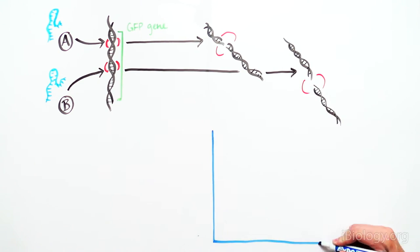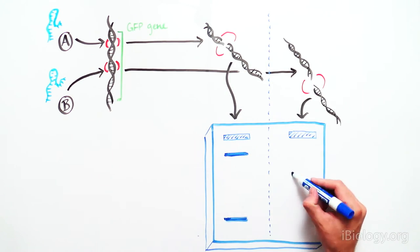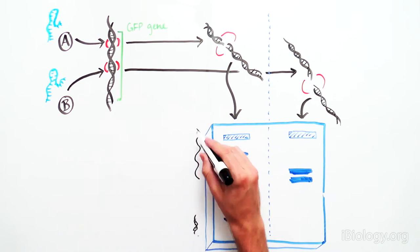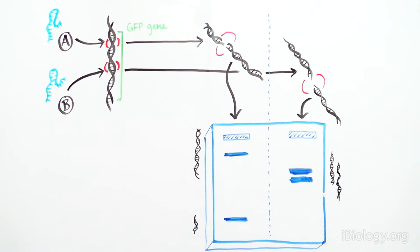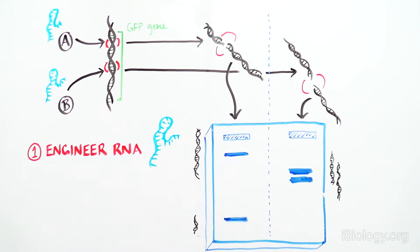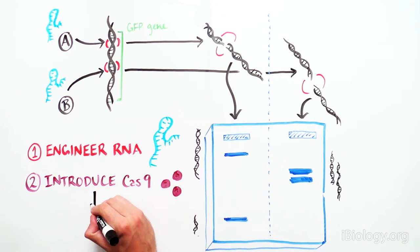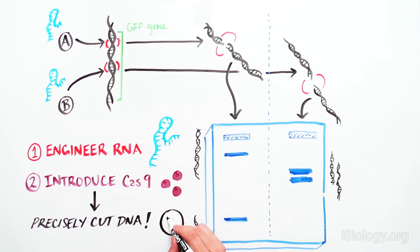On a gel that separates DNA according to size, you can see distinctly sized fragments of the GFP DNA molecule resulting from having been cut in a specific location. This was huge as it meant that scientists could engineer one RNA sequence, introduce Cas9, and cut DNA at a specific location of their choice.